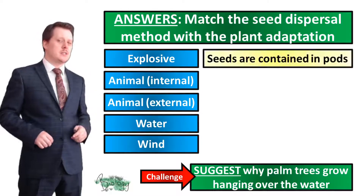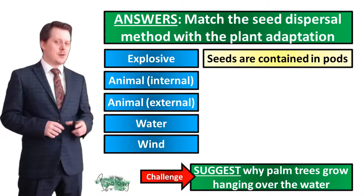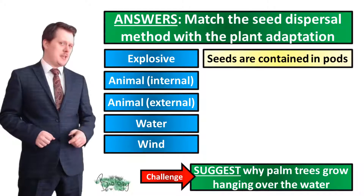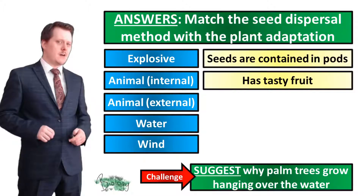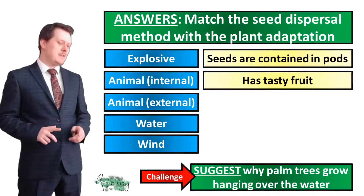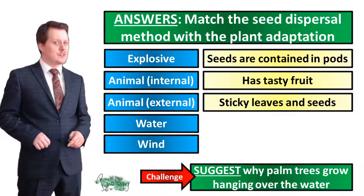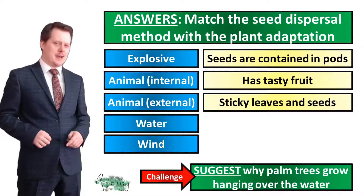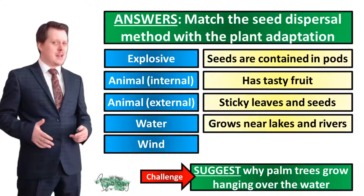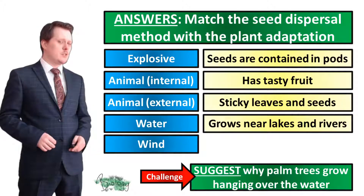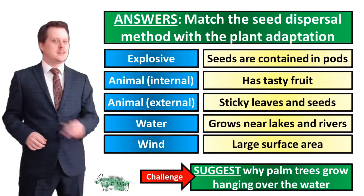The adaptation of explosive seeds is that they are contained in pods, because they need that pod to build up tension so they can explode. If our seed has been dispersed by going through the inside of an animal then it probably got there by having tasty fruit. If it moved from point A to point B on the outside of an animal then it will have sticky seeds to stick to the fur of the animal. If our seeds are dispersed via water then our plant is probably growing near a lake or a river. Seeds dispersed via the wind have a large surface area so the wind can easily carry them away.